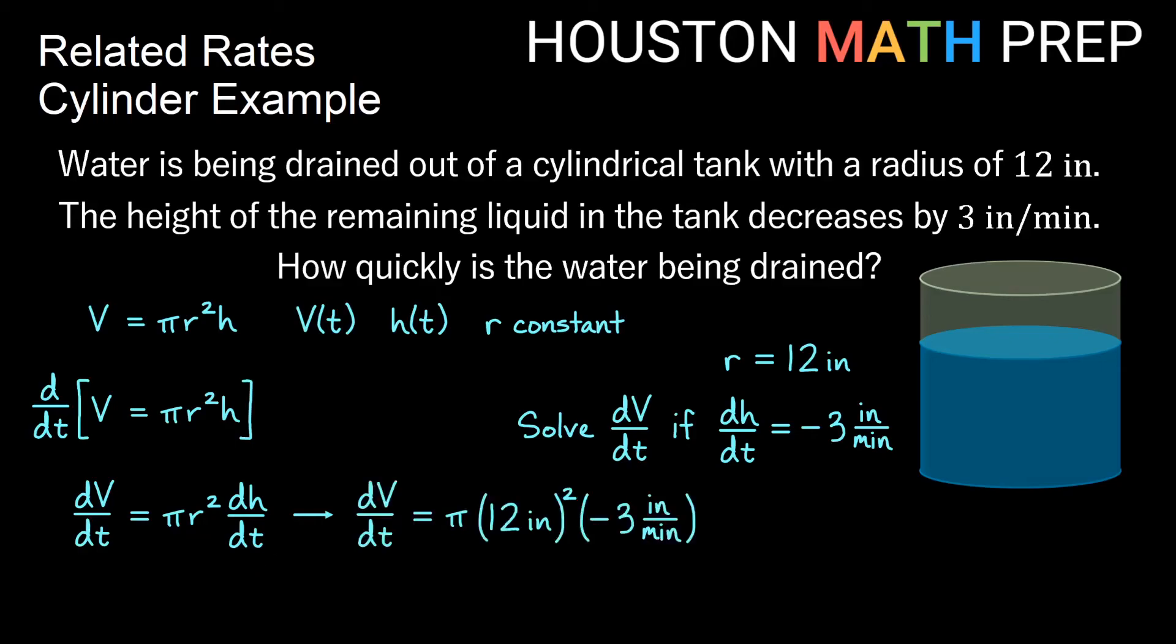So if we plug those things in, we'll get dV/dt is equal to pi times 12 inches squared times negative 3 inches per minute. So you'll notice we have inches and we have squared, so we actually get inches squared here, but I have another inches here. So we're going to actually get units of inches cubed on the top, and we square our 12, we get 144 times three, we'll get negative 432.